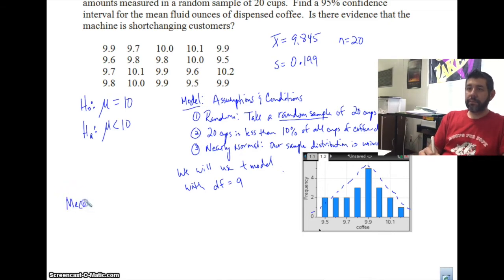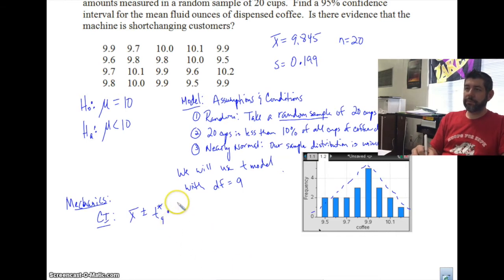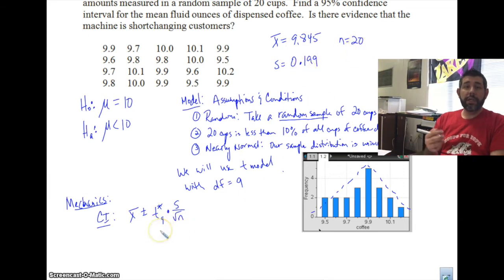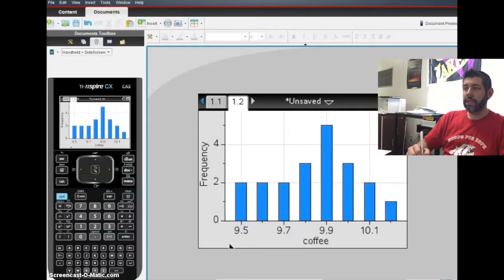Let's do our confidence interval first. The confidence interval formula is X-bar ± T* (with 19 degrees of freedom) × S over the square root of N. We have X-bar, S, and N = 20. We need to find T* for a 95% confidence interval with 19 degrees of freedom, and we'll compute that on the TI-Nspire.